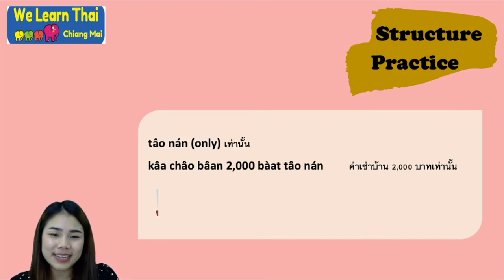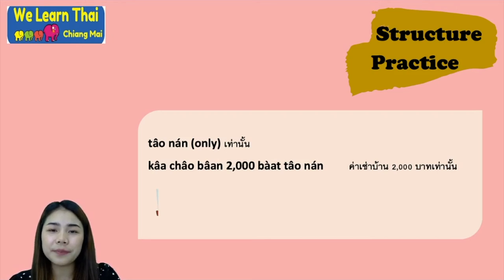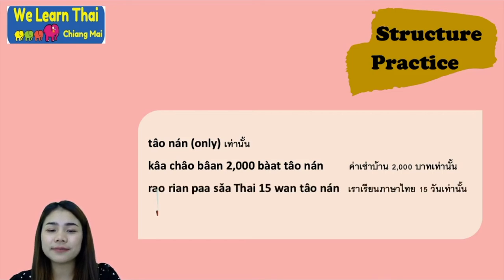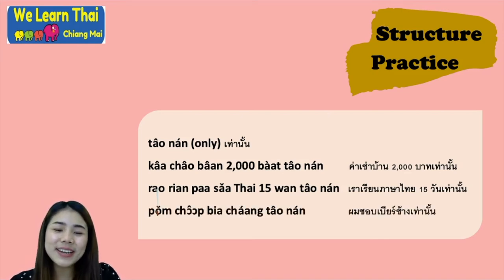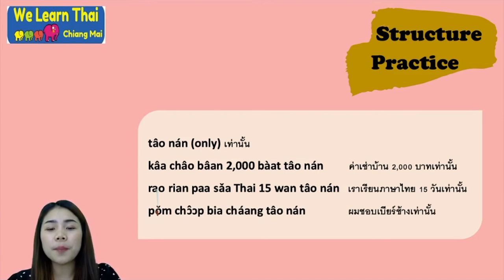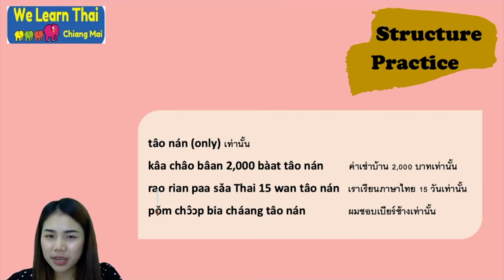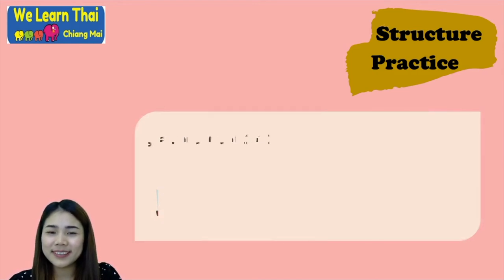Next, the word เท่านั้น means only, and it is placed at the end of the sentence. For example: ค่าเช่าบ้าน 2,000 บาทเท่านั้น — the rental fee is only 2,000 baht. เราเรียนภาษาไทย 15 วันเท่านั้น — we study Thai for only 15 days. ผมชอบเบียร์ช้างเท่านั้น — I like only Chang beer.